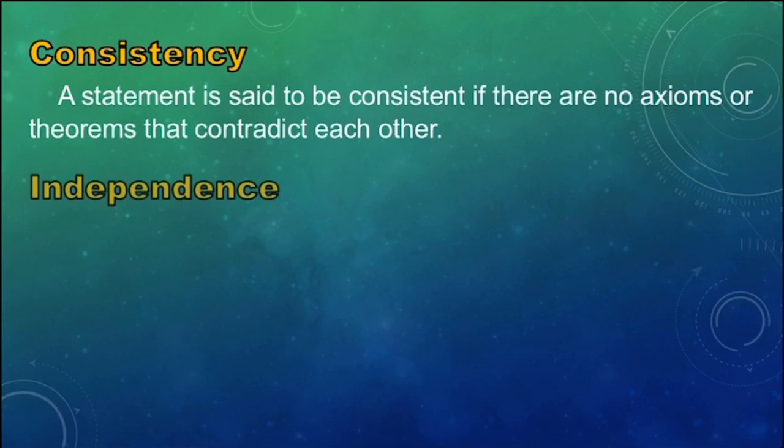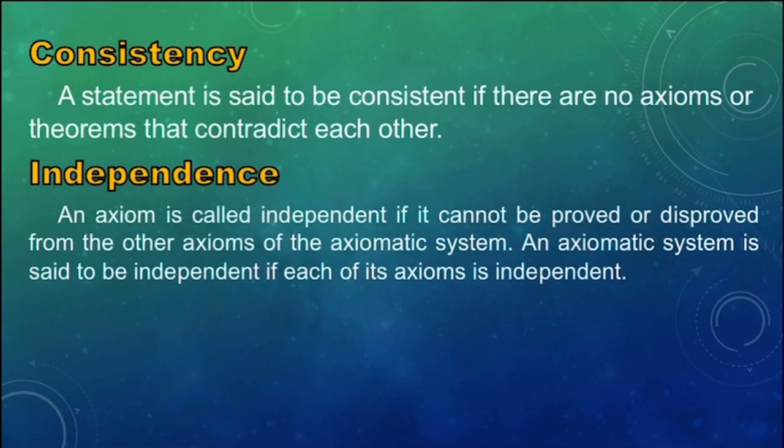Next, we have independence. An axiomatic system is called independent if it cannot be proved or disproved from the other axioms of the axiomatic system. An axiomatic system is said to be independent if each of its axioms is independent.